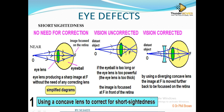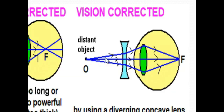To correct short-sightedness, you put on glasses with a concave lens — what we call the diverging lens. When light falls on this lens, it diverges, making the beam of rays bigger, so that once it reaches the eye's lens, the beam appears as if it is coming from a near object.